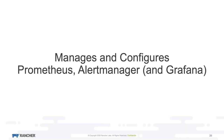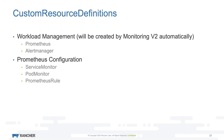The Prometheus operator is a pod that, based on some custom resource definitions, helps you manage and configure Prometheus, Alert Manager, and Grafana in your cluster. It introduces two API types for managing the actual workloads: a Prometheus resource type and an Alert Manager resource type. When you install monitoring V2, these Prometheus and Alert Manager resource types are created automatically. You can also use the Prometheus operator to install multiple Prometheus or Alert Manager instances, which can be interesting for multi-tenancy cluster use cases.